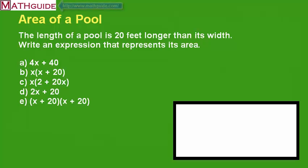This is Mark Karadimos from MathGuide.com. Today we're going to take a look at the area of a pool. The length of a pool is 20 feet longer than its width. Write an expression that represents its area. Pause the video and go.